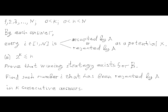The length of the sublist that player B specifies is limited by lowercase n. Before that, player B can ask an unlimited number of questions. In each question, player B specifies a sublist of the numbers from 1 through capital N, and player A must answer whether number X belongs to this sublist or not. The meaning of parameter K is the maximum number of consecutive answers in which player A is allowed to lie.